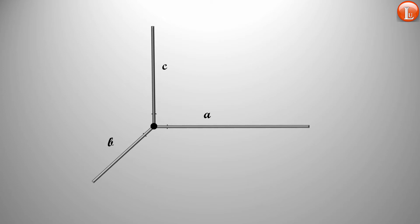If the three sides are unequal, the longest is C (the height), the second longest is A, and the shortest is B (the width). The angle between B and C, which is opposite to A, is called alpha. The angle between A and C, which is opposite to B, is called beta. And the angle between A and B, which is opposite to C, is called gamma.